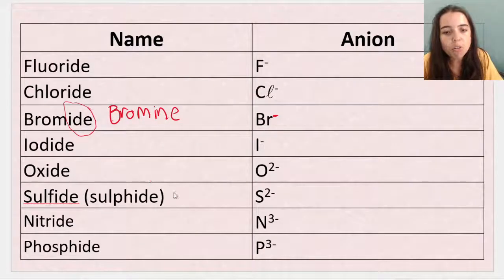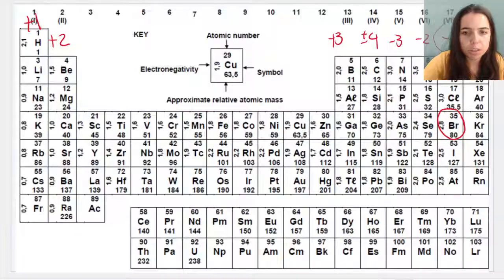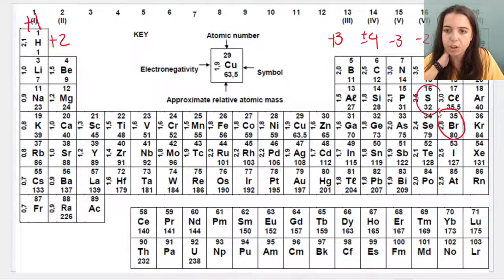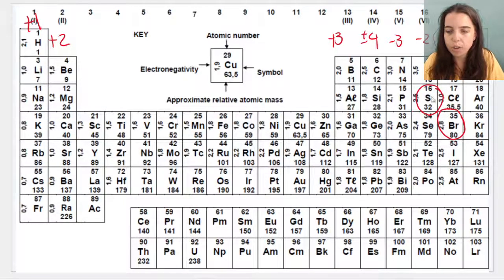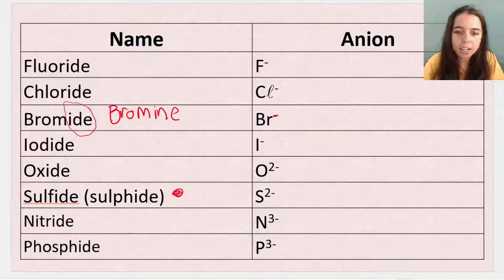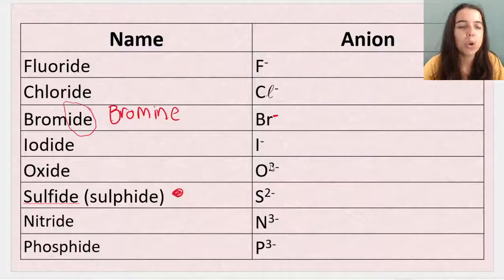If you look at sulfide, for example, either spelling is acceptable. We've got S two minus. Look at the periodic table. Look where S is. Sulfur is over here. Look at where it is, what group it's in. Minus two, which means it's gained two electrons. That's why the sulfide ion is S two minus. And the same thing works with the cations.